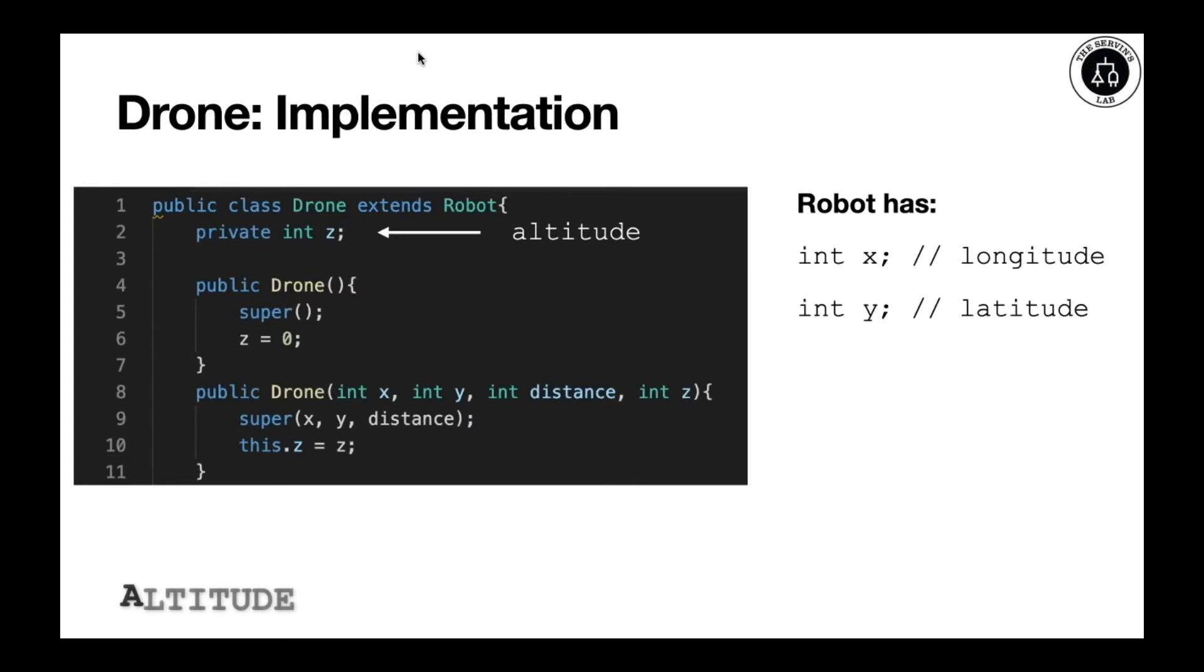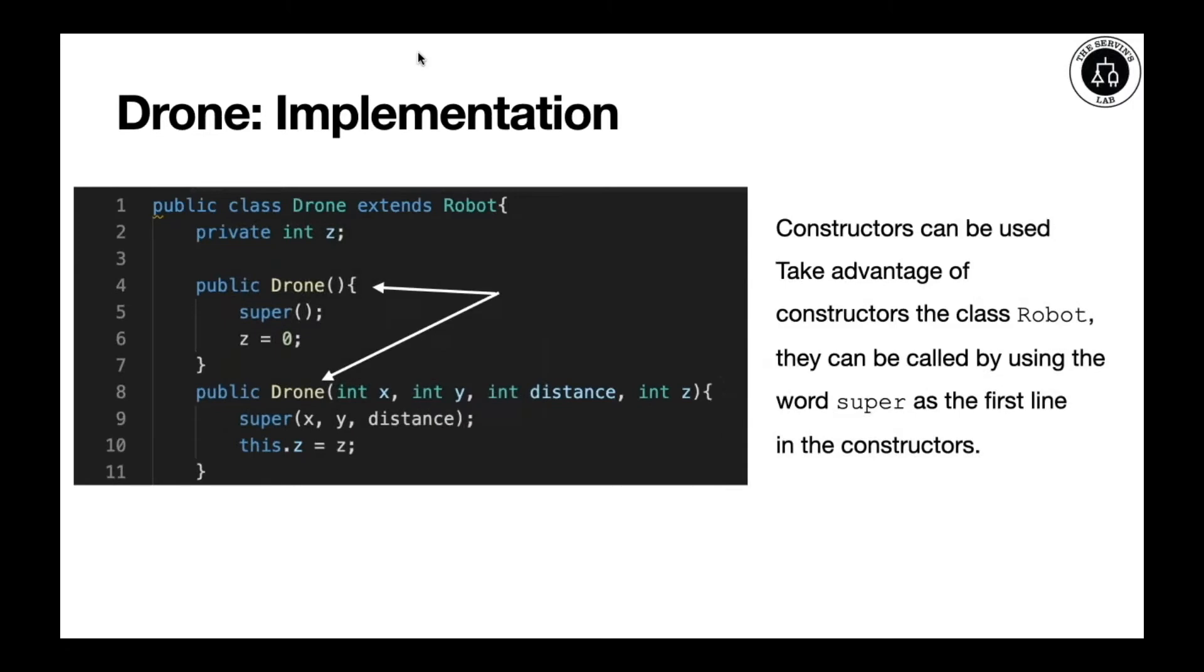Z, in this case, will represent the altitude and is what's going to make the drone unique. Notice that we have also constructors. Friendly reminder, our constructors are responsible to initialize all the fields.